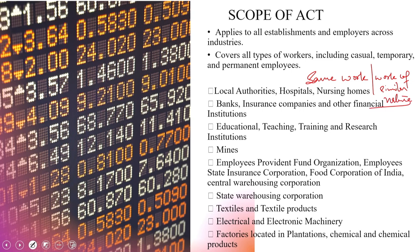When you look into the scope, the act was brought into force by the central government in employment areas such as local authorities, hospitals, nursing homes, banks and insurance companies and all other financial institutions. Education institutions, teaching, training and research institutions are part of it. Mines are part of it. Employees Provident Fund Organization (EPFO), Employees State Insurance Corporation, the Food Corporation of India (FCI), Central Warehousing Corporation, and State Warehousing Corporation are all part of it.